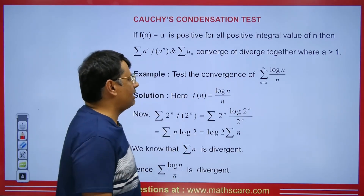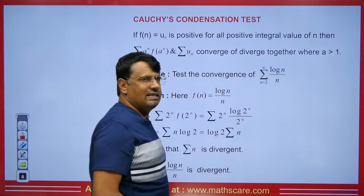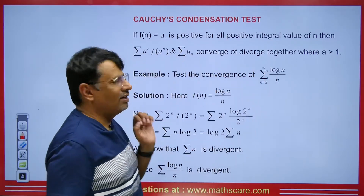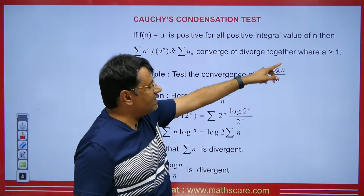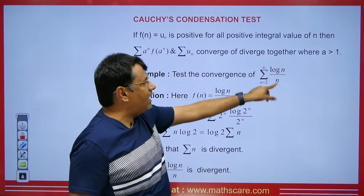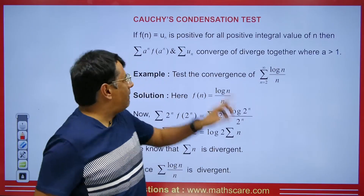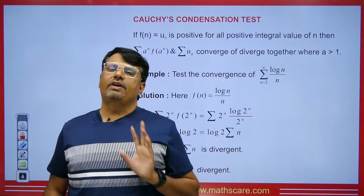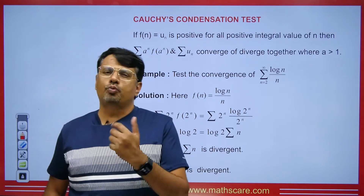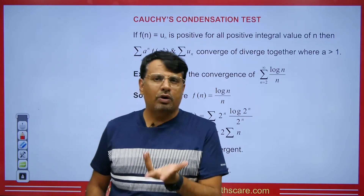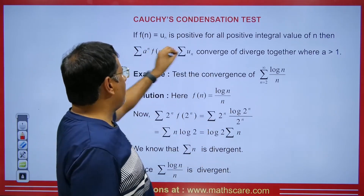Now what does the Cauchy Condensation Test say? It says that whatever summation u_n we have as a series — wherever n appears, you have to write a to the power n. The value of a should be greater than 1. It can be 2, 2.5, 3, or even more. I will always take a = 2.